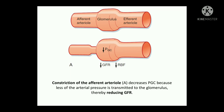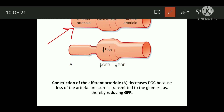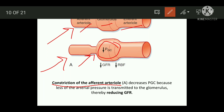This is the normal setup: afferent arteriole, glomerulus, and efferent arteriole. In this condition, if there is constriction of the afferent arterioles, this will cause a decrease in the glomerular capillary hydrostatic pressure. Once the glomerular capillary hydrostatic pressure decreases, this will cause a decrease in GFR and a decrease in renal blood flow.